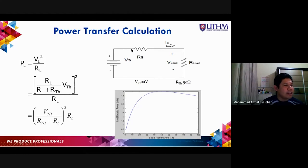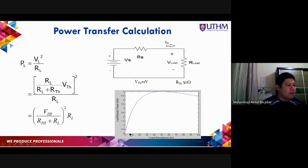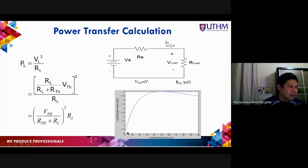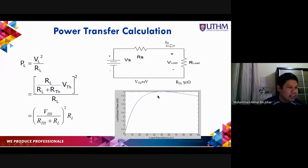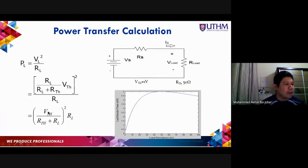With V_Thevenin over R_Thevenin plus R_L, all squared, times R_L — if we plot this, a load resistance far away from the Thevenin value of 50 ohms gives slightly lower power output. For example, with 1 volt, R_Th = 50 ohms, and R_L = 1 ohm, you compute 1/(50+1) squared times 1, giving a small power value.